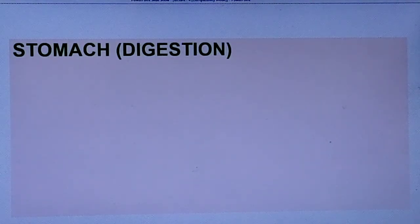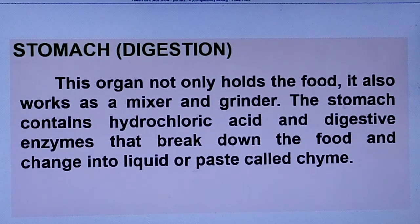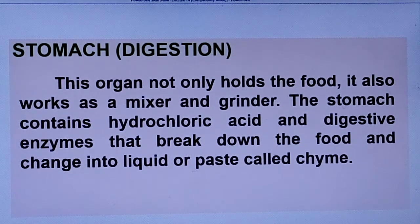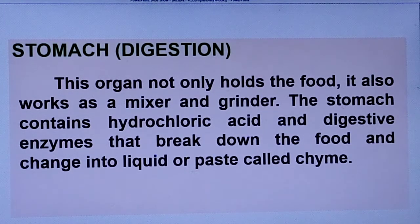Next, the stomach. What does the stomach do? In the true sense, digestion begins in the stomach — most digestion occurs here. This organ not only holds the food, it also works as a mixer and grinder. The food we eat stays in the stomach where it is mixed and ground. Think of it like a blender — the stomach blends and mixes all the food together.